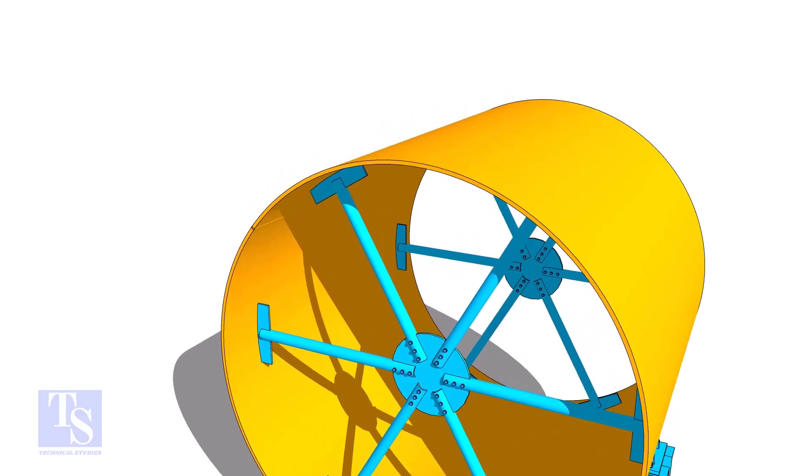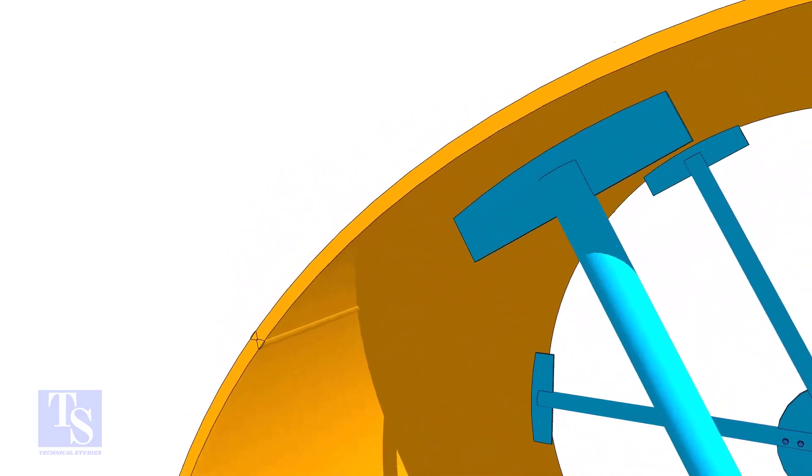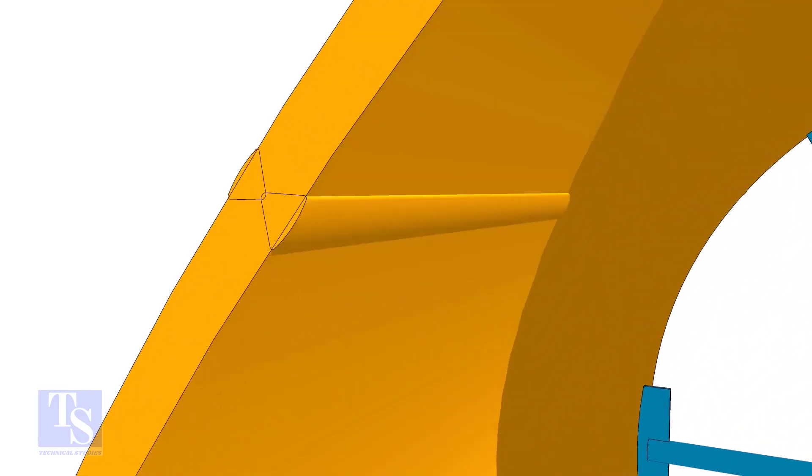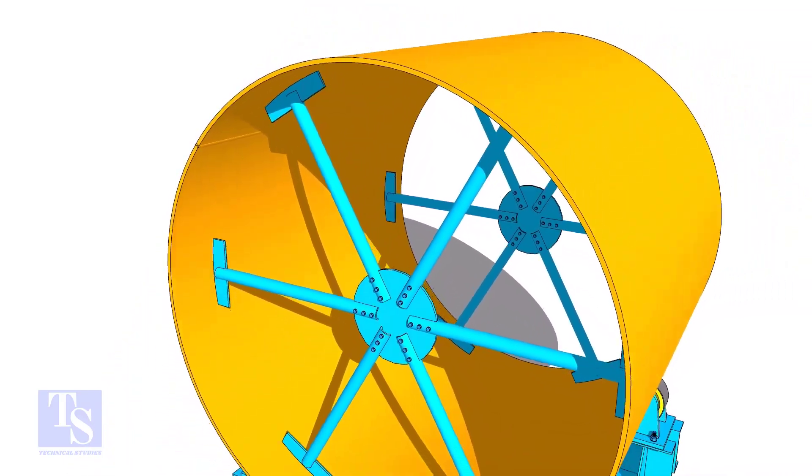After the shell plate rolling, install the spider support and complete the long seam welding. The spider support will help to maintain the circularity of the shell.